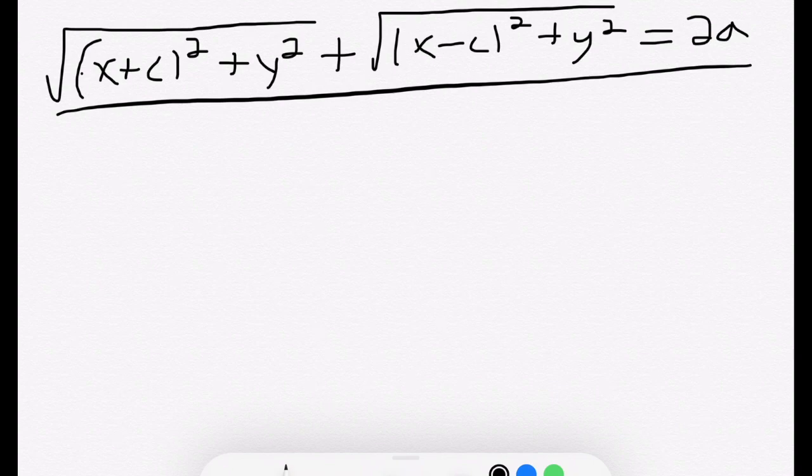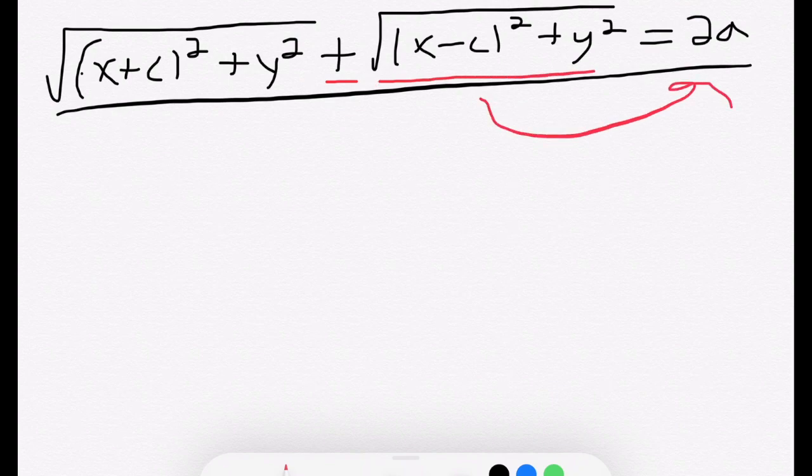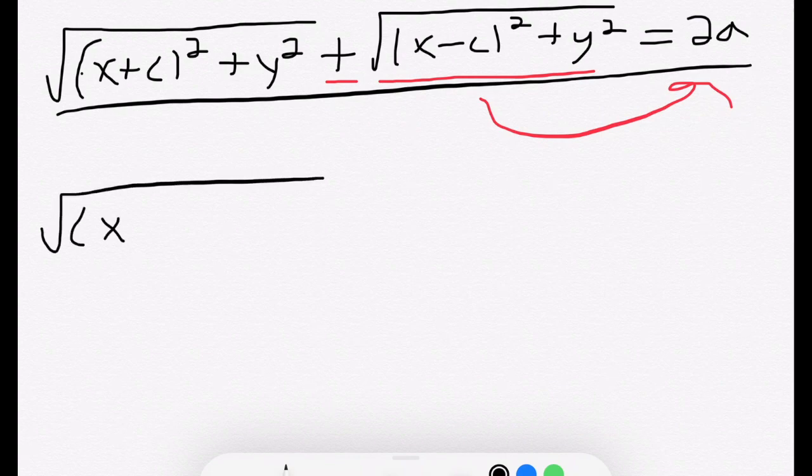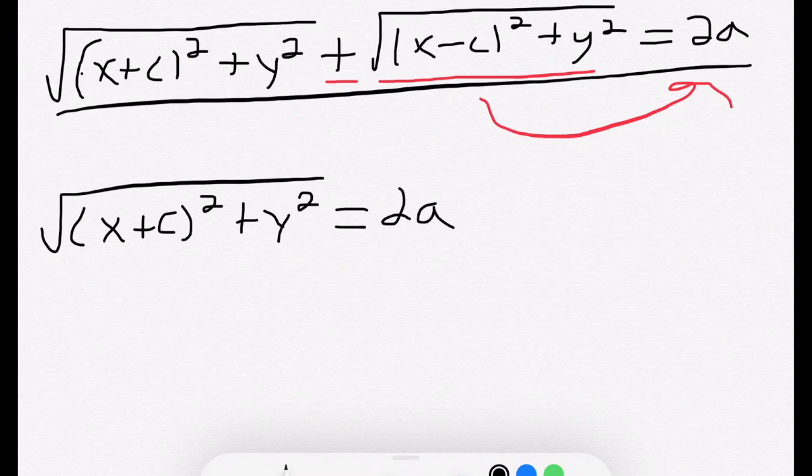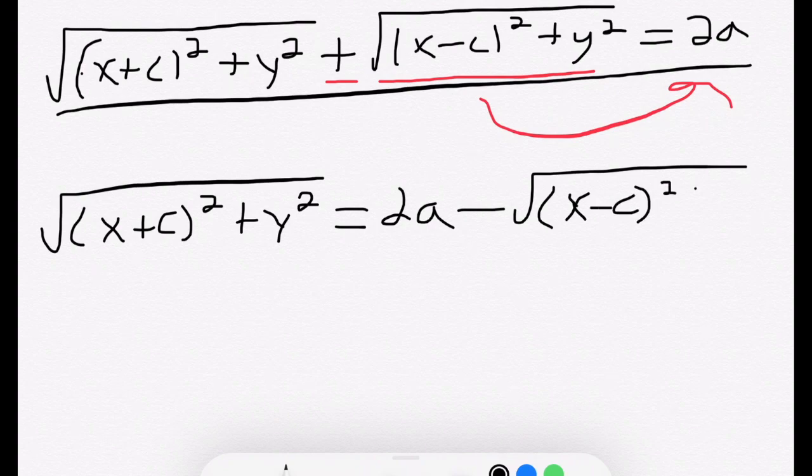The problem is we have two square roots on the left-hand side, so what I'm going to do first is I'm going to subtract this square root to the right-hand side. So that is going to give me square root of x plus c squared plus y squared equals 2a minus square root of x minus c squared plus y squared.